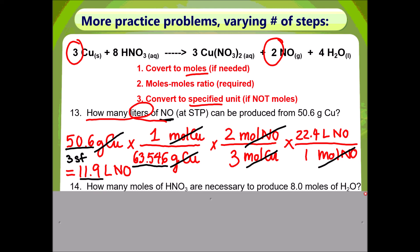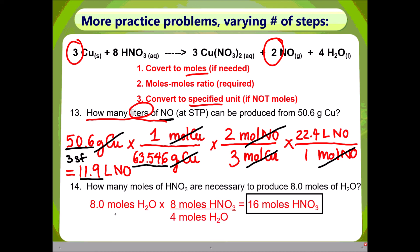Now pause the video and try problem 14 on your own. Welcome back. This problem should be fairly simple. You are starting with moles of water, therefore you don't need Step 1. Step 2, moles-to-moles ratio: get rid of moles of water and get to moles of nitric acid, just as the question asked. There is no need for Step 3, because the specified unit they asked for is moles. Therefore you are done. Your answer has two sig figs, just like your given. And that's the end of today's lesson — make sure that you remember and follow these three steps. They will make your life much easier in this unit.